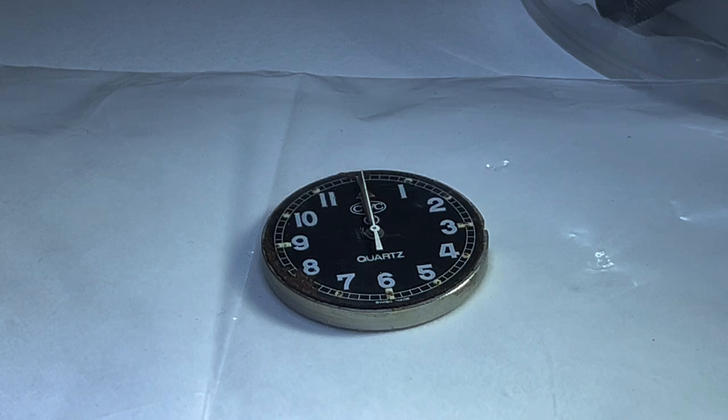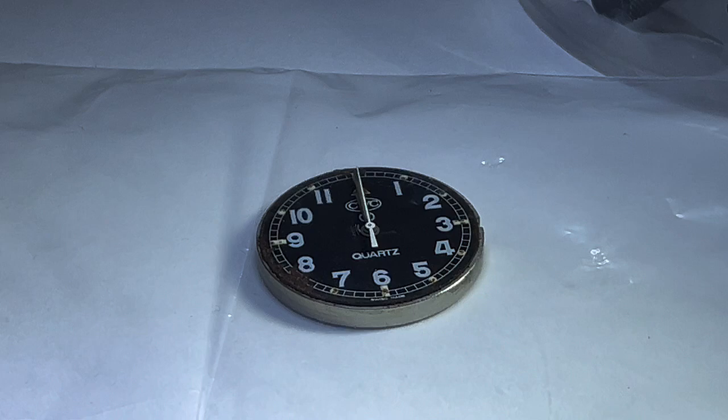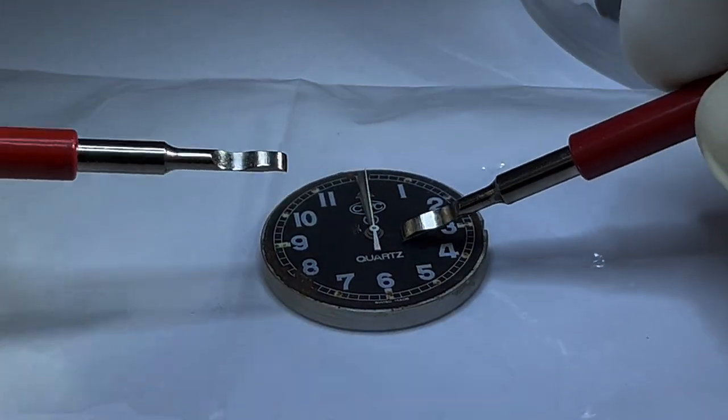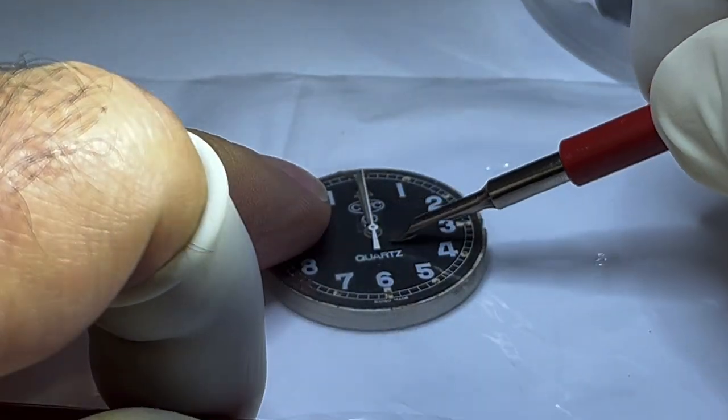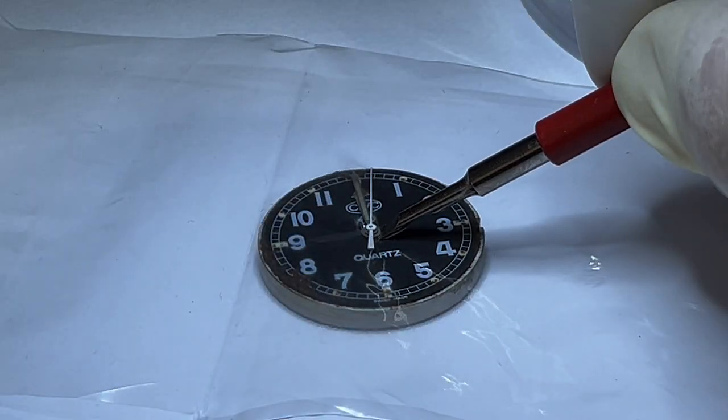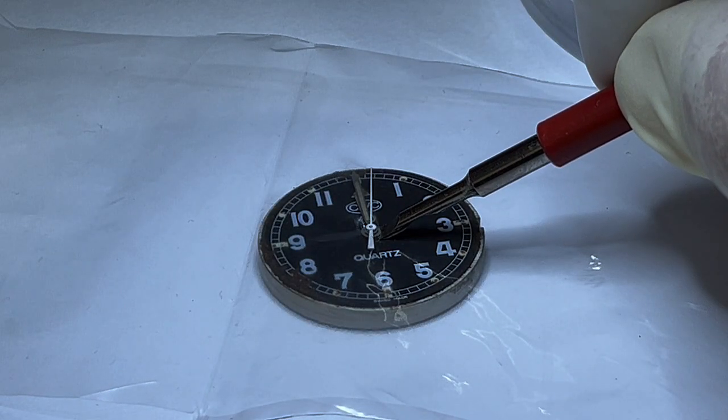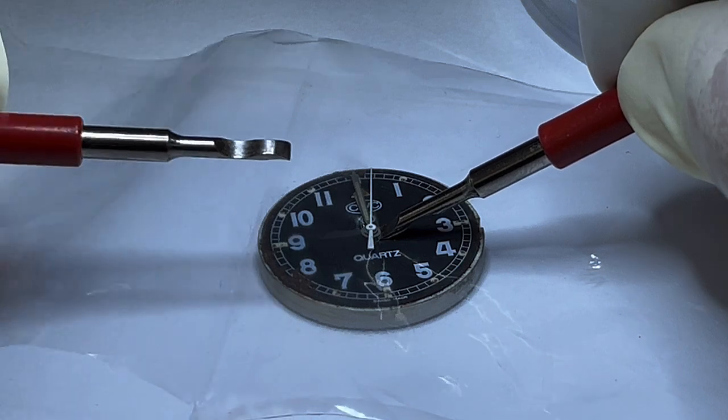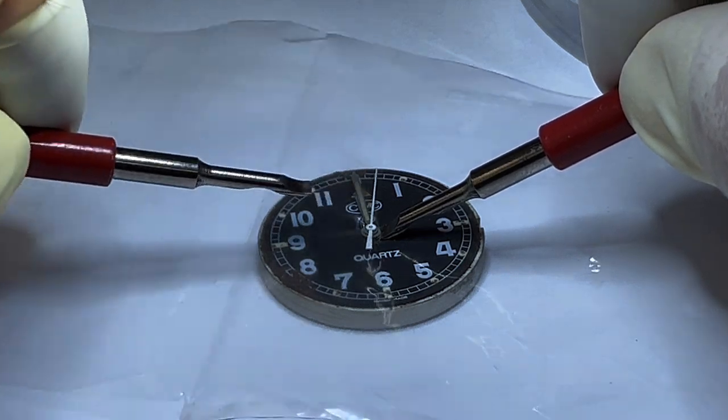Just place the polythene over the dial and then gently push one of the levers under one side perpendicular to the direction of the hands. This will fold the polythene around the hands on that side. Then do the same for the opposite side.